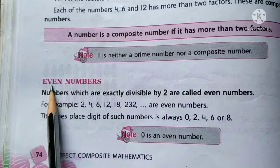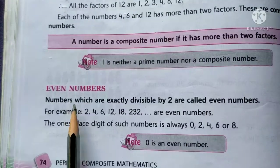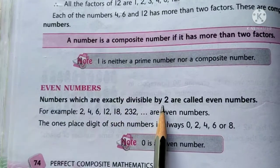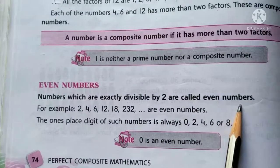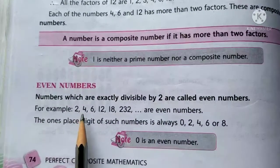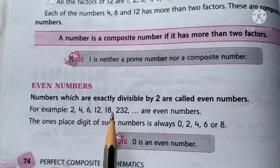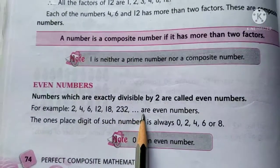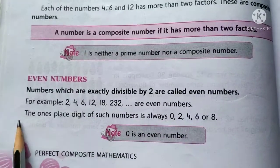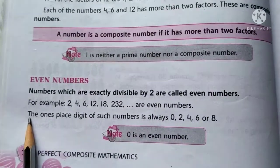Students, now let us learn about even numbers. Numbers which are exactly divisible by 2 are called even numbers. For example, 2, 4, 6, 12, 18, 232 are all even numbers. How can you identify the even numbers children?